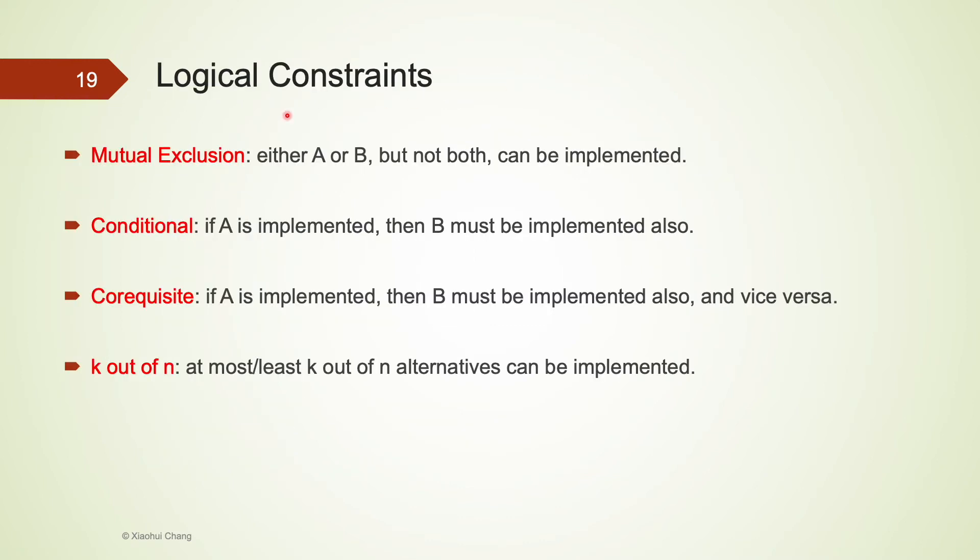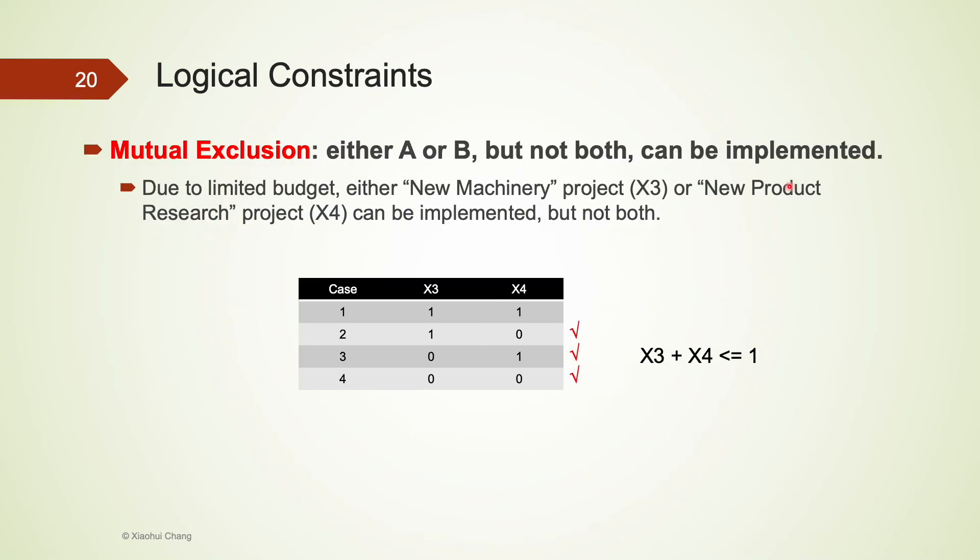We have learned to use binary decision variables to model yes or no decisions. They can also be used to formulate logical constraints, including mutual exclusion, conditional, co-requisite, k out of n logical constraints. Let's look at a few examples here. A mutually exclusive constraint is about choosing between two alternatives. It permits one of the two alternatives to be chosen, but not both. For example, the capital budgeting example we were working on has an additional constraint, due to limited budget, either new machinery project 3 or new product research project 4 can be implemented, but not both.